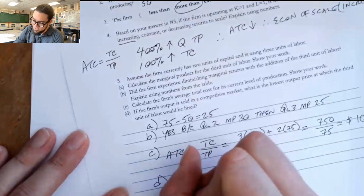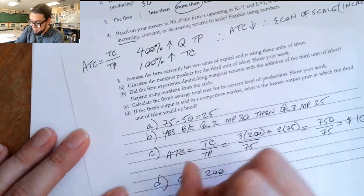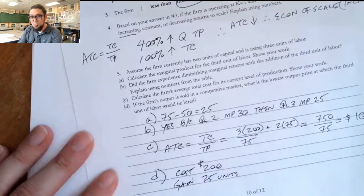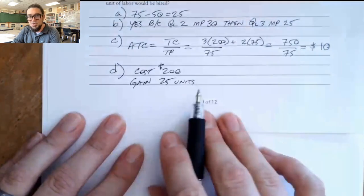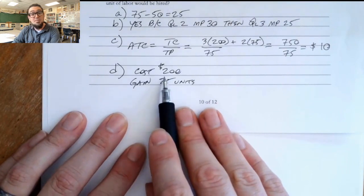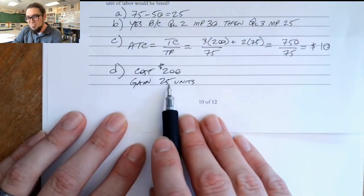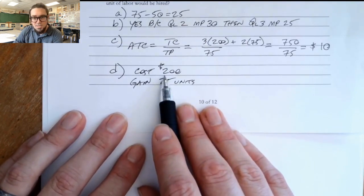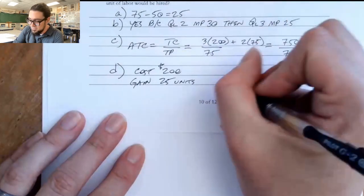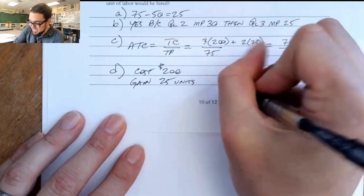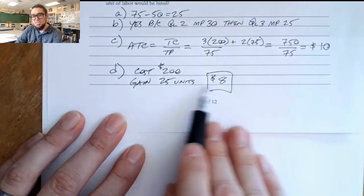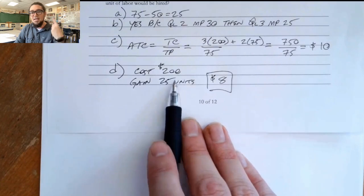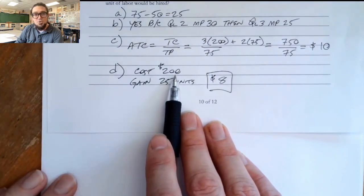So the cost of the worker was $200. The gain was 25 units. So how much would a unit have to be priced in order to make up that cost? What would be worth it for one unit to be priced at least how much to make it worth hiring that worker for $200? And all you got to do there is divide $200 by 25 and you'll find the answer is $8. If the product is selling for $8, then the 25 units that this worker generates are worth $200. And then it becomes worth the cost to hire that worker for $200.